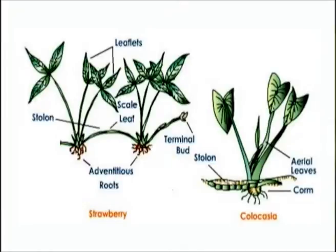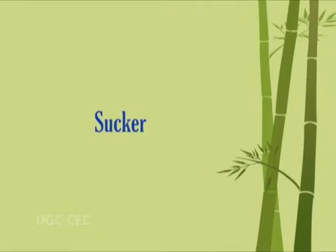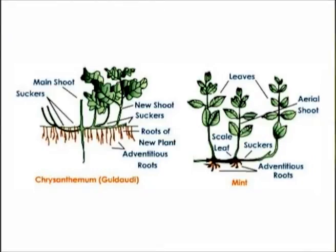An offset is a horizontal, short, more or less thickened prostrate branch producing a tuft of leaves above and a cluster of small roots below at its apex — for example, Pistia, Salvinia, and Eichhornia. A sucker is a creeping stem developing from the underground part of the stem but growing obliquely upwards, directly giving rise to a leafy shoot or new plant — for example, Chrysanthemum and Mentha piperita.